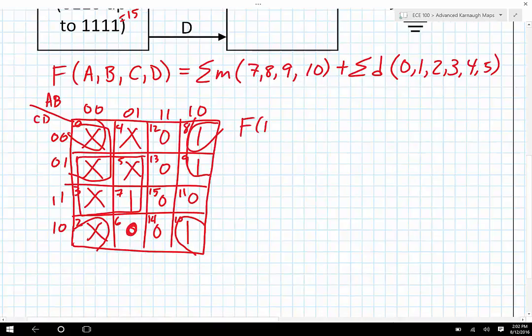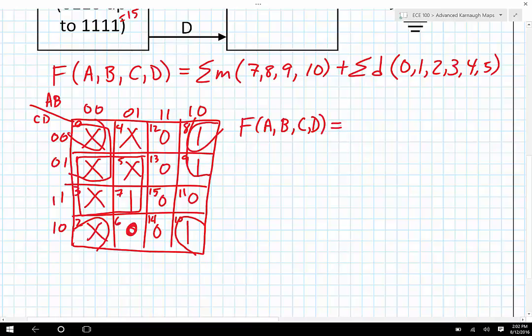Let's take then F of A, B, C, and D. This is going to be equal to, let's take cells 0, 1, 8, and 9. I can see that they all have B bar in common, and they also all have C bar in common. Then let's take cells 1, 3, 5, and 7. Well, they all have A bar in common, and then they also all have D in common. And then let's take the four corners. They all have B bar in common, and then they also have D bar in common.